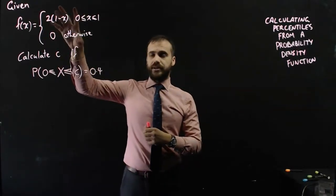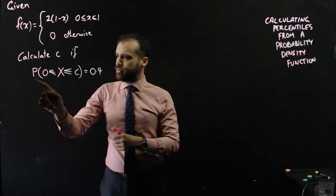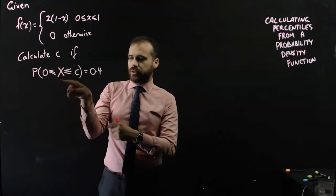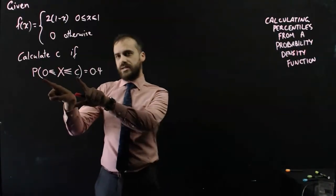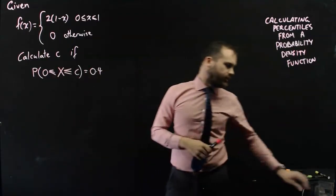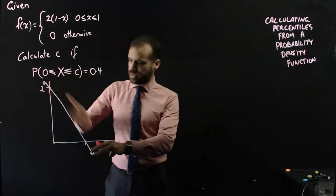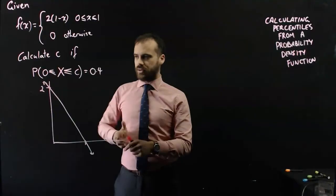So here's our reverse question. I've got my probability density function here. I'm going to calculate C if the probability that the random variable X is between 0 and C is equal to 0.4. Now I want to draw you a picture of that. Now that function there can be expanded to be 2 minus 2X, which is a linear equation that looks something like that.